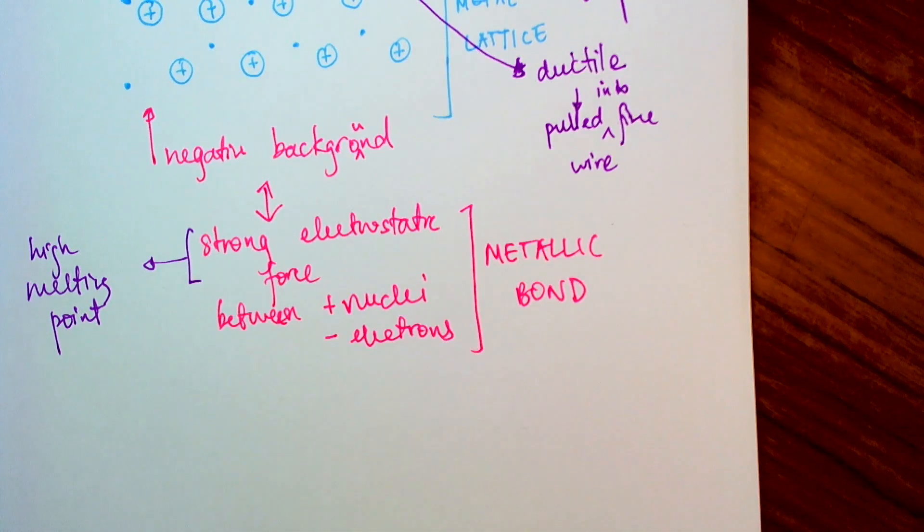So that's a good thing because metals are good conductors. So we like to pull them into fine wires to make wires for our homes, for computers, for all electronic equipment. So they can be pulled into fine wires that can conduct electricity.